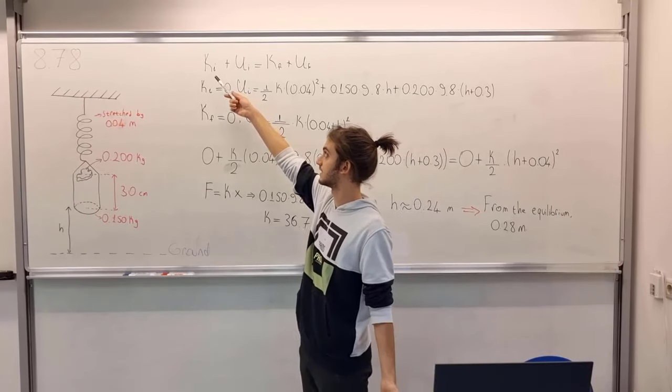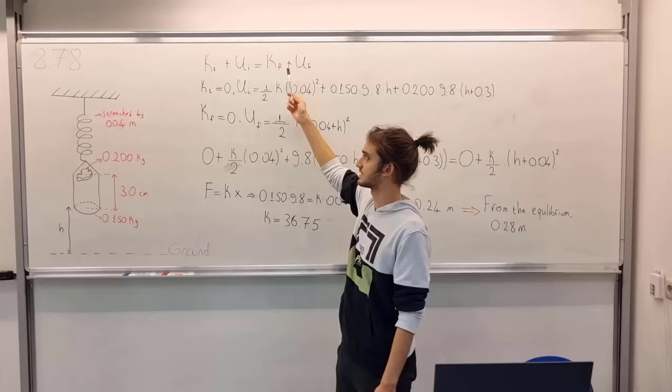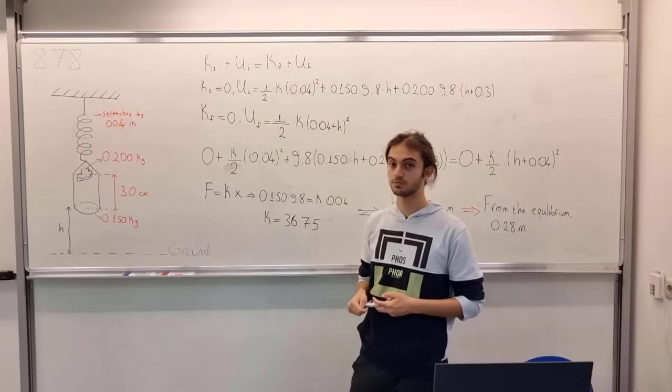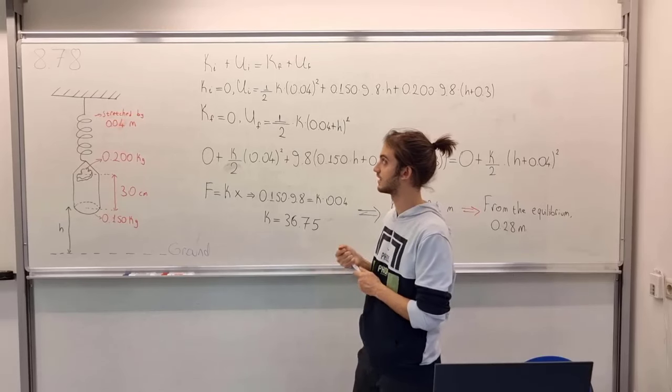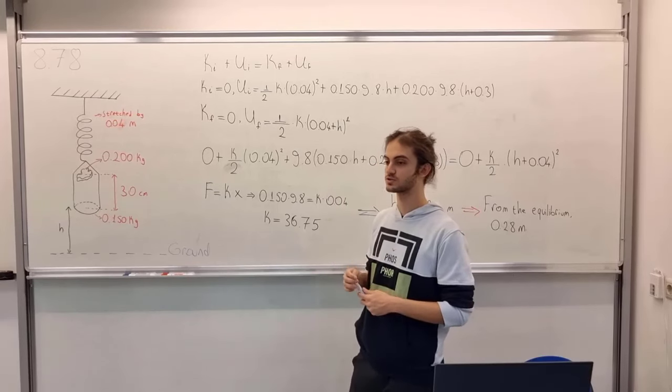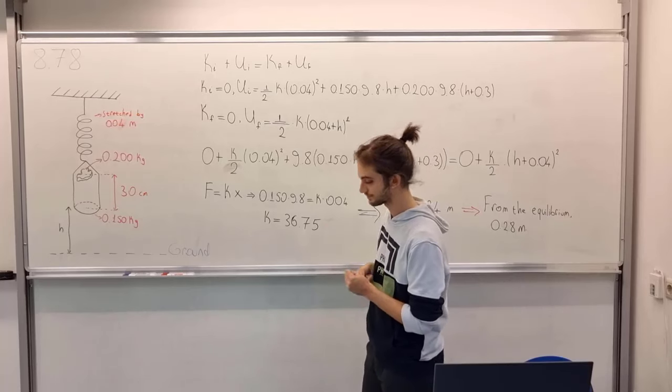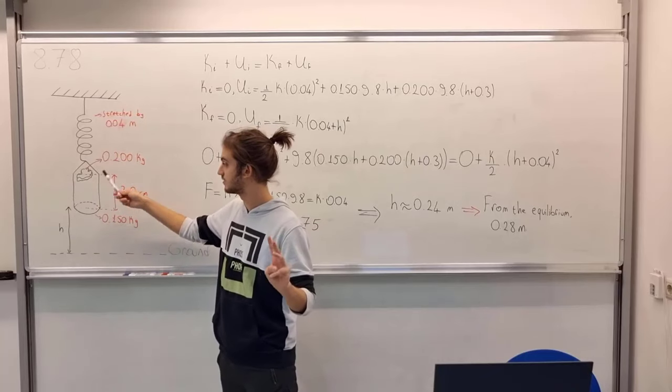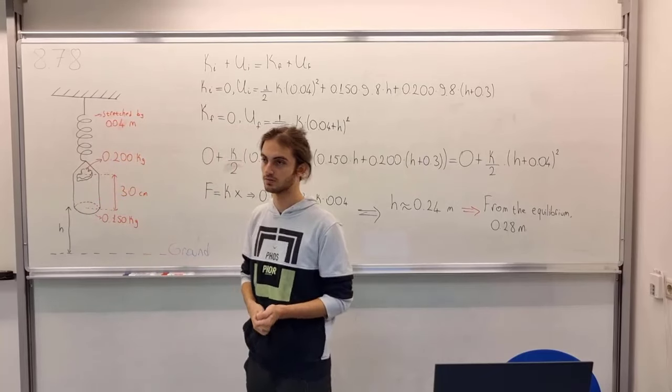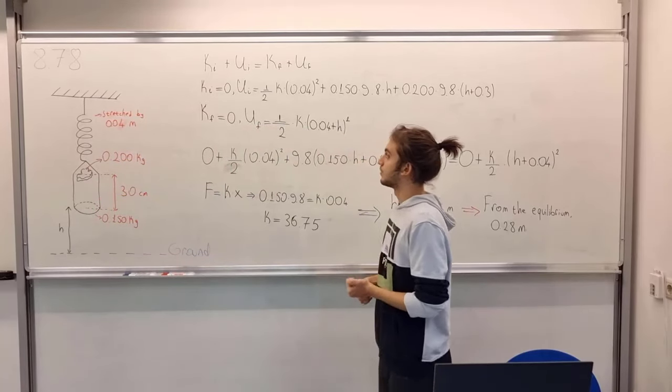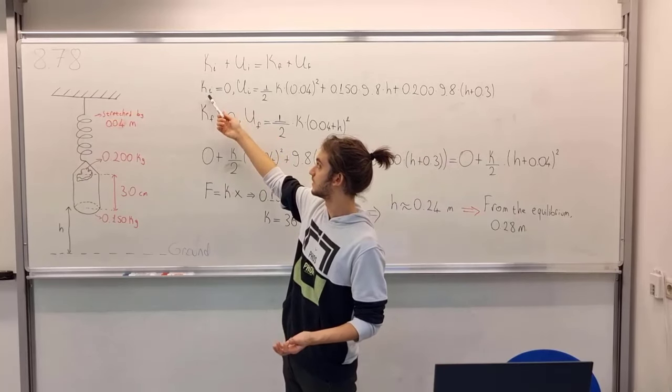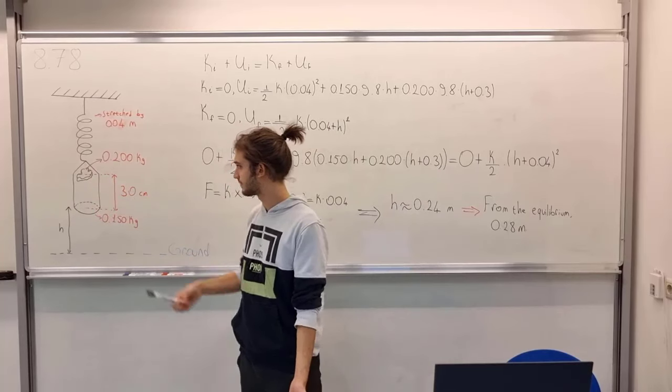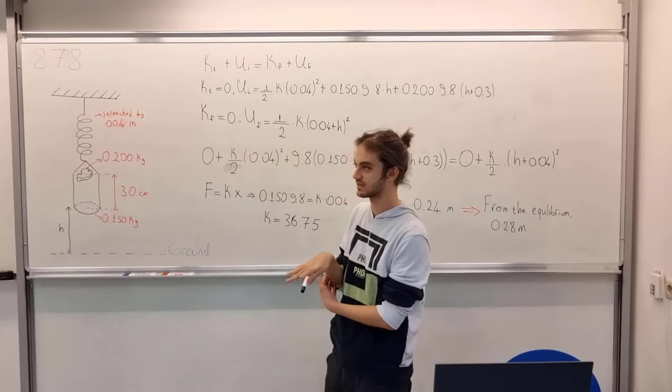It dictates this statement: the sum of the initial energies has to be equal to the sum of the final energies, provided that there is no external force on the system. Our system consists of these three objects: putty, spring, and frame. The initial velocity of the system, all of them, is zero because everything is at rest.